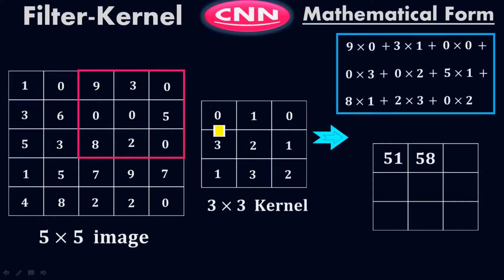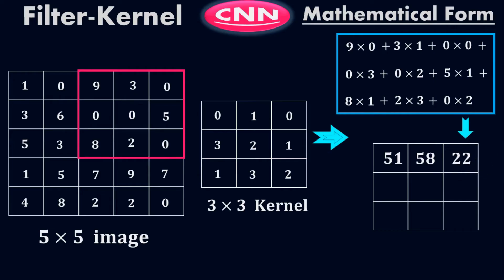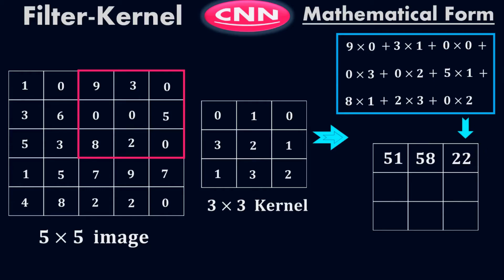Now apply the filter on the third three by three matrix: 9×0 + 3×1 + 0×0 + 0×3 + 0×2 + 5×1 + 8×1 + 2×3 + 0×2. When you do the simplification, at the end you will get 22. So the third value is 22. Once we finished the first row, we leave it and start from the second row.